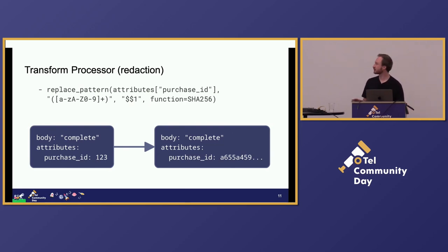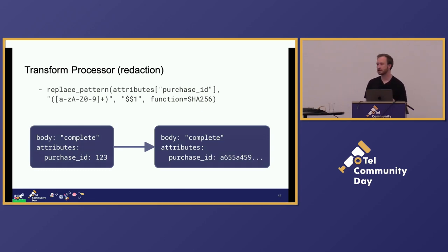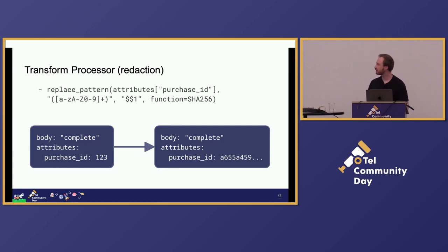So first, I'm not a lawyer, so don't take this as advice for how to handle PII — it's just illustrative. But what we could do here is take the purchase ID out of an attribute, match it with a regular expression, and then use the match group as input to a SHA-256 function and then replace the attribute on there. A cool thing about this is that the SHA-256 function is actually an OTTL function — it's not hard-coded into the replace pattern function at all. You could replace it with whatever hashing algorithm you wanted. Additionally, that whole function argument is optional, so if you didn't pass that in, it would just use the capture group without hashing it at all.